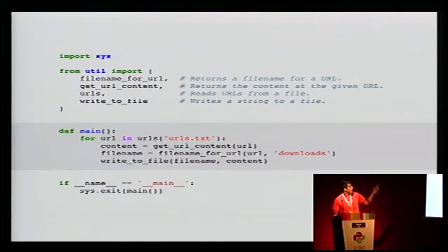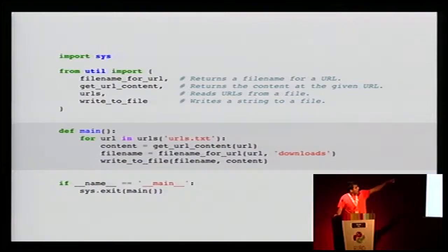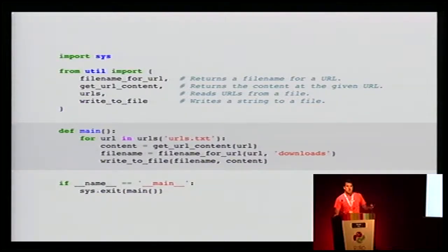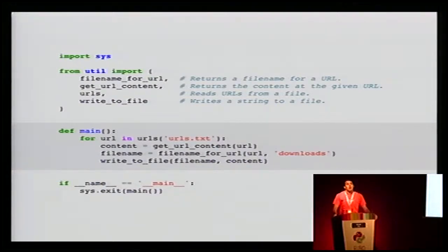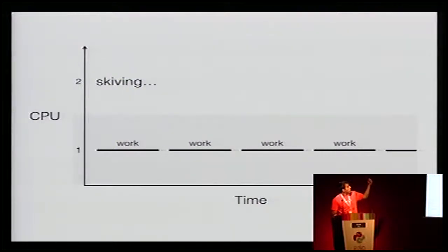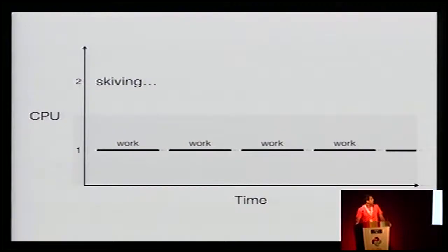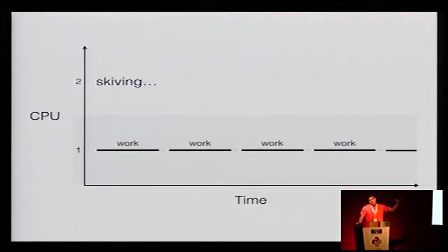The full sequential code is on the slide — you can actually run it and it works. The highlighted bit: we go over the URLs, get the content, and put it on the machine sequentially — one at a time. When thinking about how this looks on my CPU over time, it's only running on one of the cores. If we have two cores, the second core is doing nothing as far as my task is concerned. We do a bit of work getting the URL, downloading it, storing it, then doing the next one.